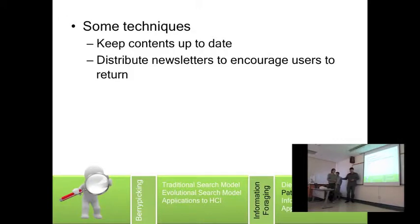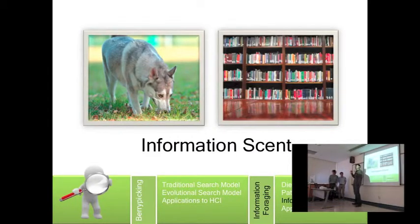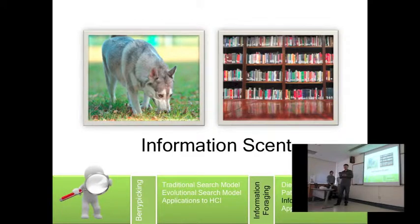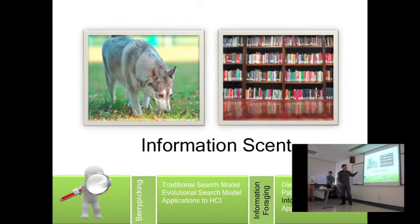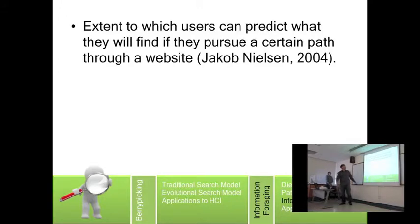It's one thing to find the prey that you want, and another thing to know it's over there. That's why the concept of information scent is very important in Information Foraging. Just like an animal that relies on its sense of smell to find prey, in information searching, the scent refers to the extent to which users can predict what they will find if they pursue a certain path through a website. If a website has a strong scent, there's a strong indicator that you will find the information you want, and vice versa.